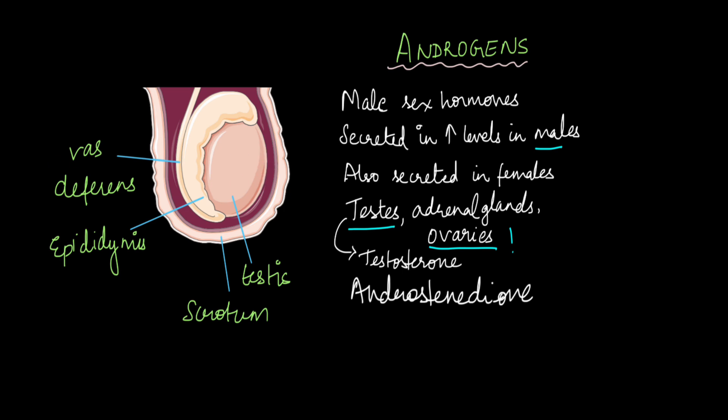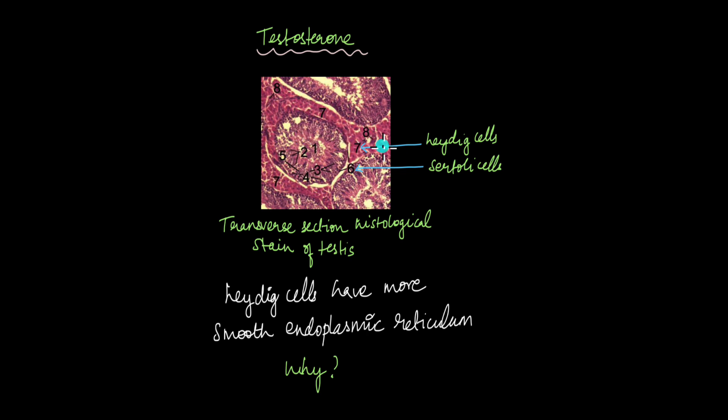Now where exactly in the testes are these androgens produced? The testes has different types of cells like the Leydig cells, the Sertoli cells and the developing spermatocytes which are the developing male gametes. In the testes it is the Leydig cells that secrete all types of androgens in the male body. And if you take a look at the structure of the Leydig cells anatomically, they have more smooth endoplasmic reticulum or SER compared to rough endoplasmic reticulum. Can you think of a reason why this would be so? If you haven't guessed it already, I will tell the answer at the end of this video.